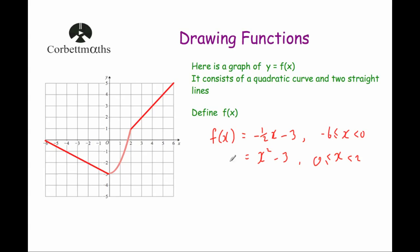For the last piece, a straight line with a gradient of 1 across 1, so the gradient is 1. The equation is f of x equals x minus 1 — checking the y-intercept gives minus 1. This is for values of x bigger than or equal to 2 and less than or equal to 6. And that's it.